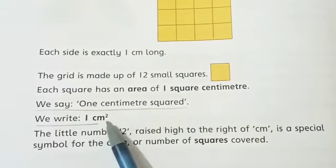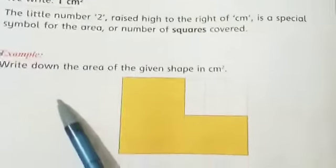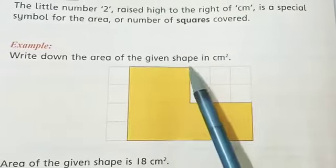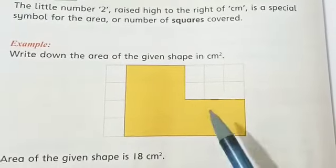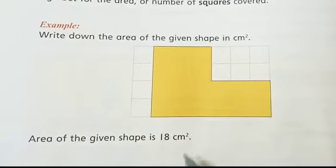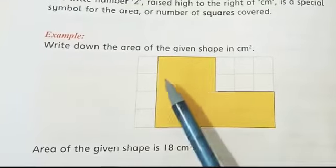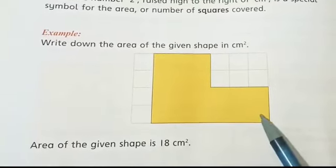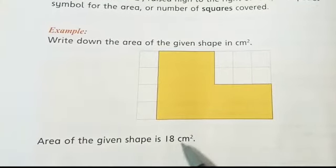How do we mention what unit we use? For example, if we measure in centimeters, we say square centimeters because length multiplied by the same quantity - centimeter into centimeter squared. Now you have to find the area of the given shape. The area of the given shape is 18 centimeter squared.